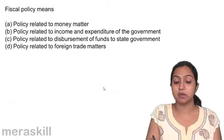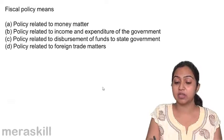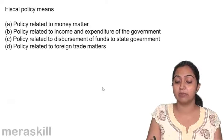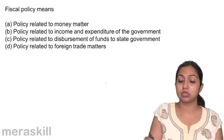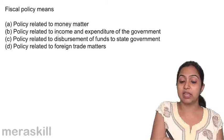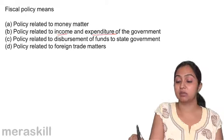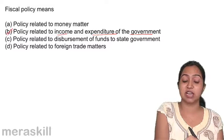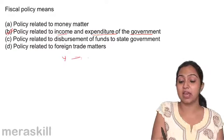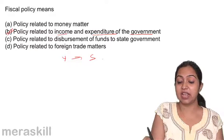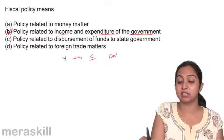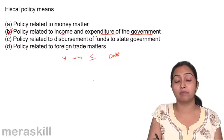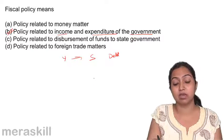Fiscal policy means policy related to money matters — the income and expenditure of the government. It is about how the government gets its income and how the government spends it, and if income is less than spending, how it manages through debt. This is what fiscal policy is all about.